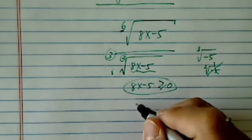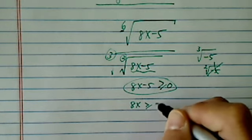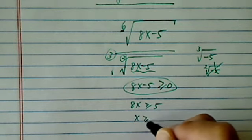So let's solve for this one. So 8x is bigger or equal to 5, and x is bigger than 5/8. That's your domain.